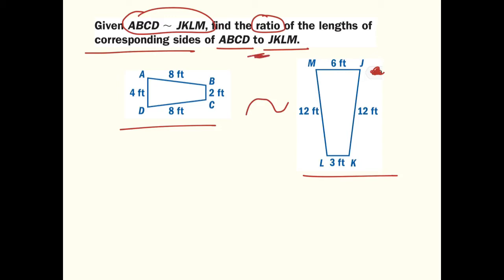And this is kind of like a ratio here, because we have the word to. So let's just take AB here, and let's take JK, because those are the corresponding sides. So AB to JK can actually be rewritten as AB over JK.